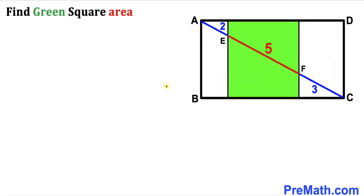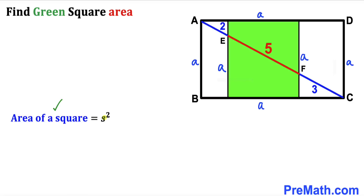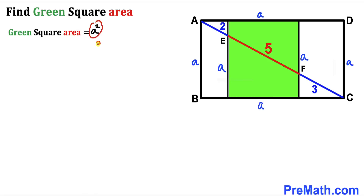Let's get started. Focusing on the green shaded square, we know all its side lengths are equal. Let's label the side length as lowercase a, so all four sides are a. Since we want the area of the green square, we recall the area formula: area = s², so the green square's area equals a². Our task is to find the value of a².